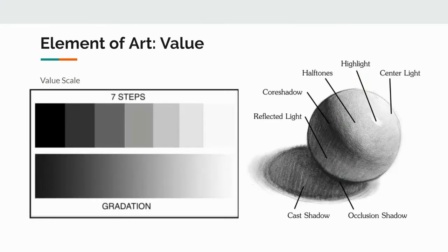Another element of art we're going to focus on is value. Value is how we create lights and darks in our work. The two main things I focus on for sixth grade art are value scale and gradation. We practice using those techniques to create a form — you can shade a form so that it looks three-dimensional by the use of value and light.